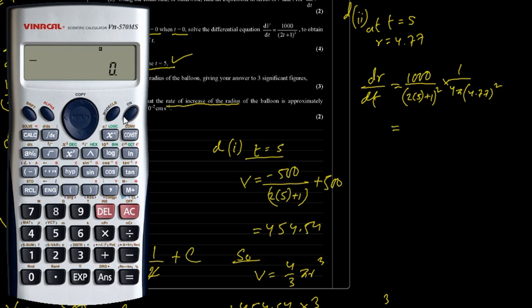Equals to, let me calculate, 1,000, divided by 5, 2 is 10, 10, plus 1, 11, 11, whole squared is 121. It is 8.26, this is the value, now multiply by 1 by this, so let me first write 8.26, so let me do it here, into 1 by 4 pi r squared, 4 into pi, into 4.77, whole squared, bracket close.